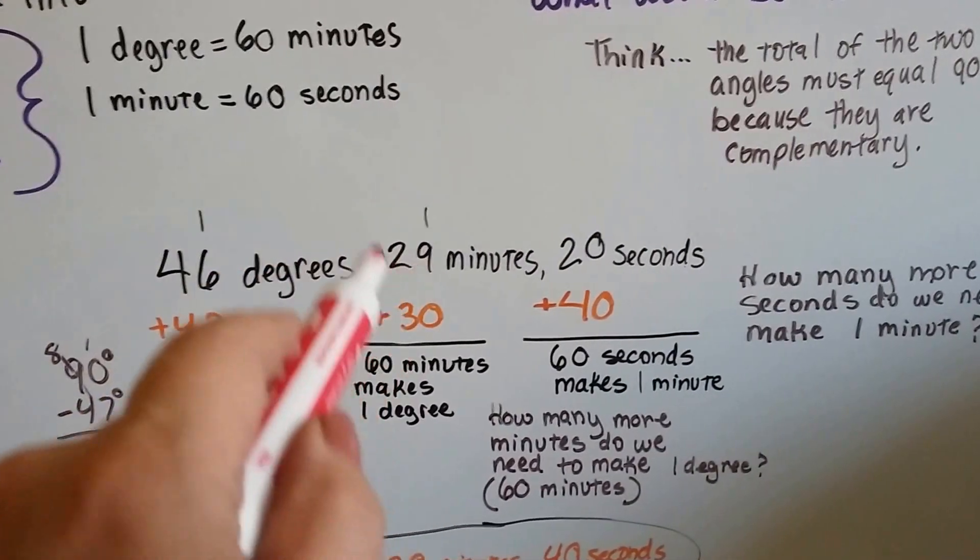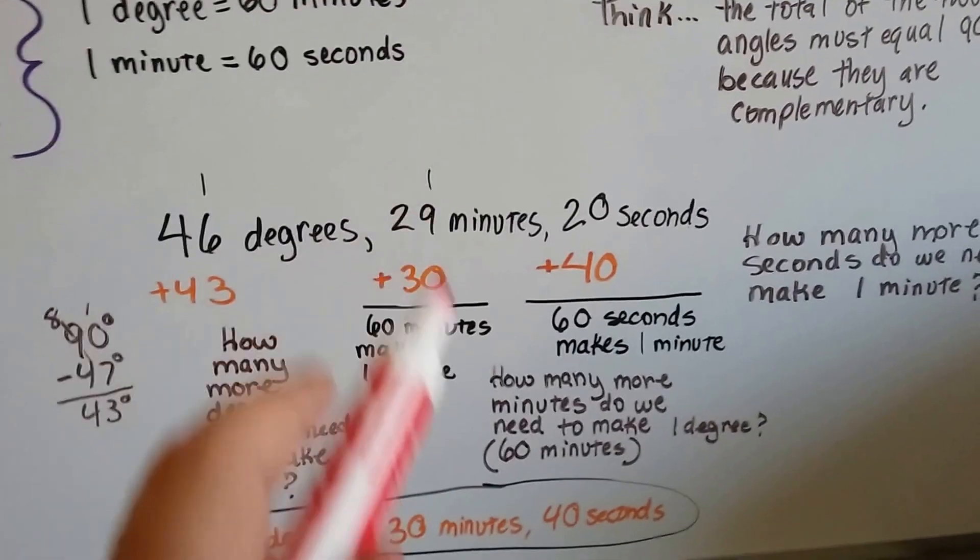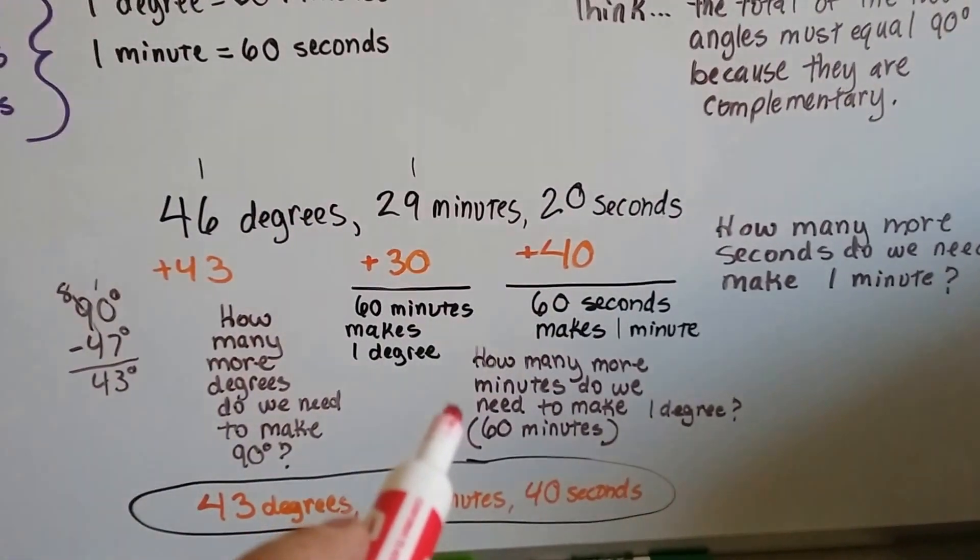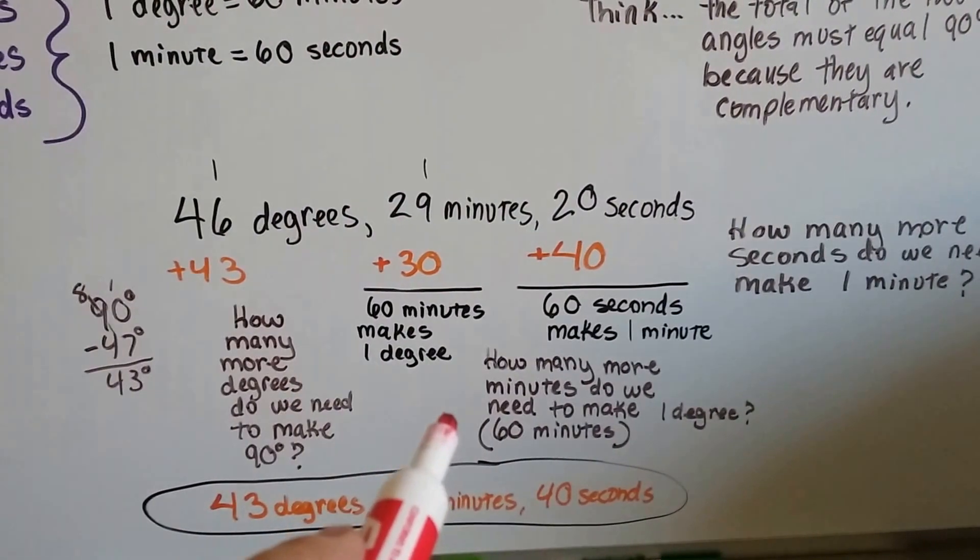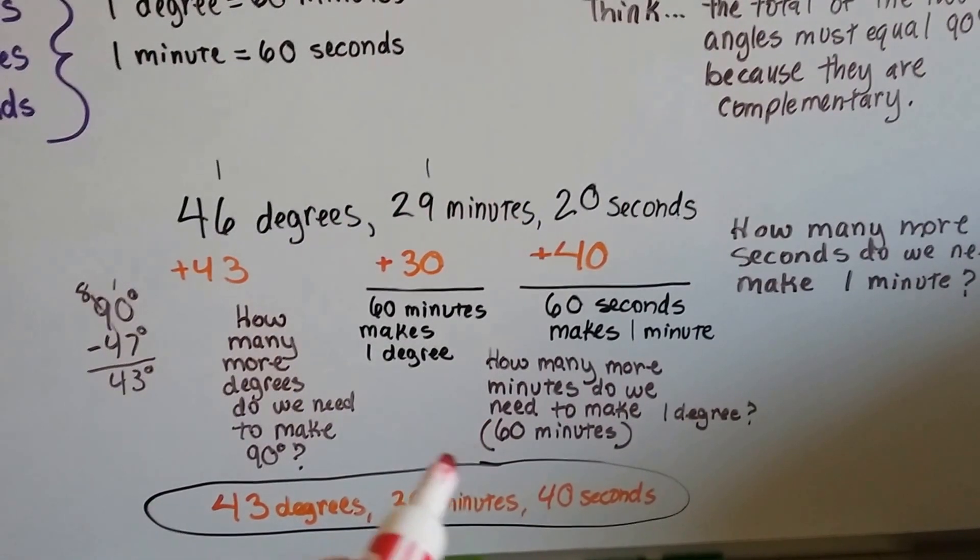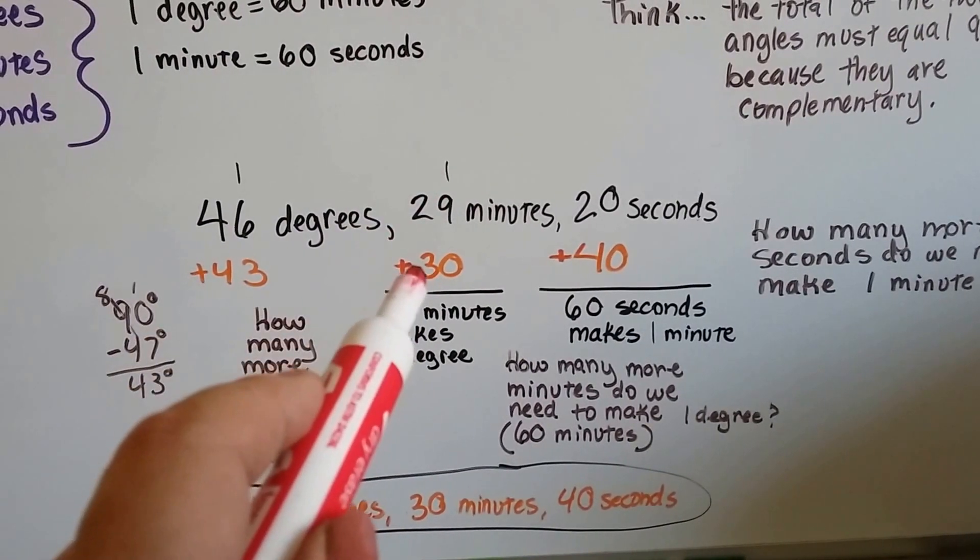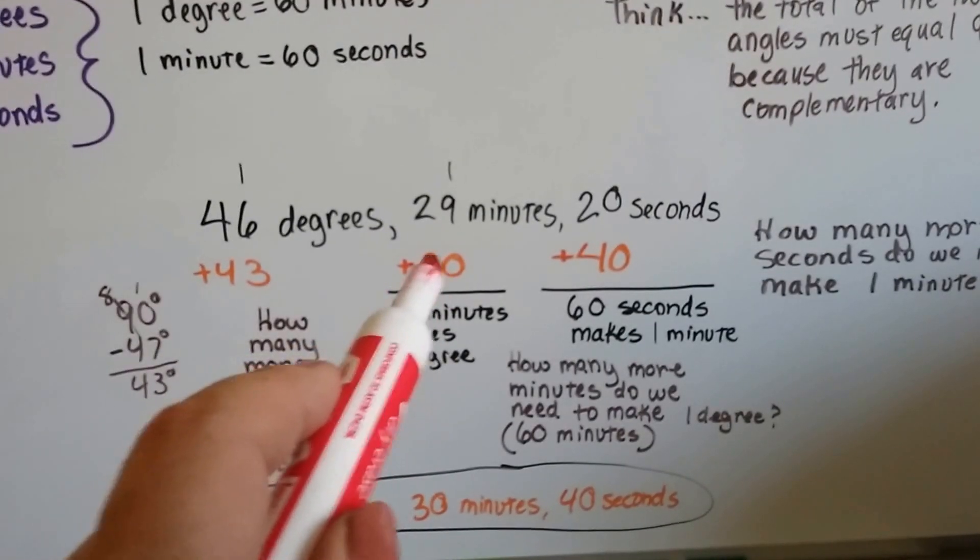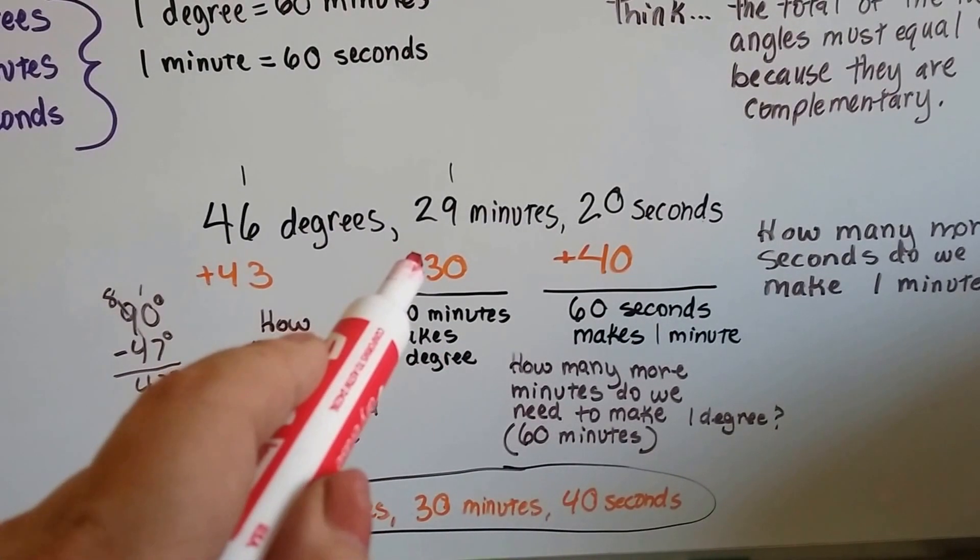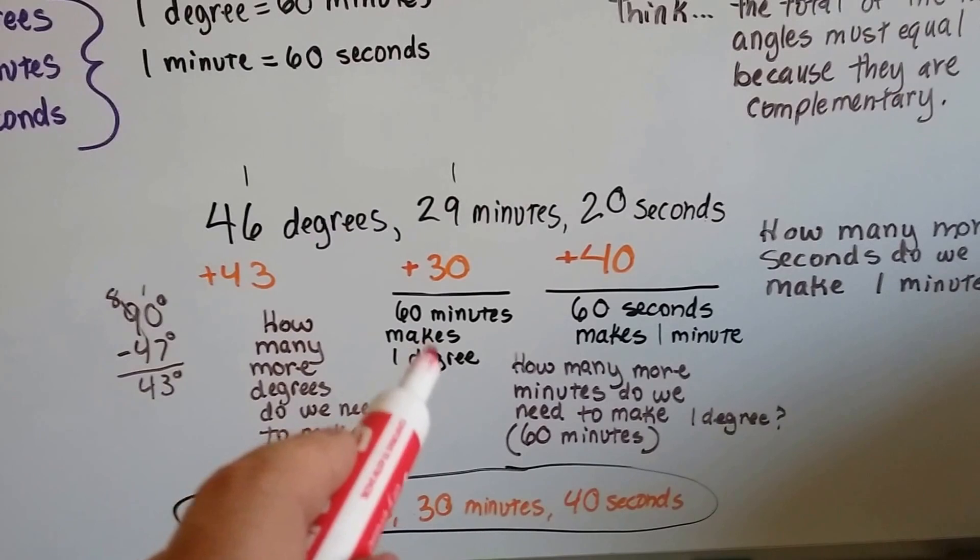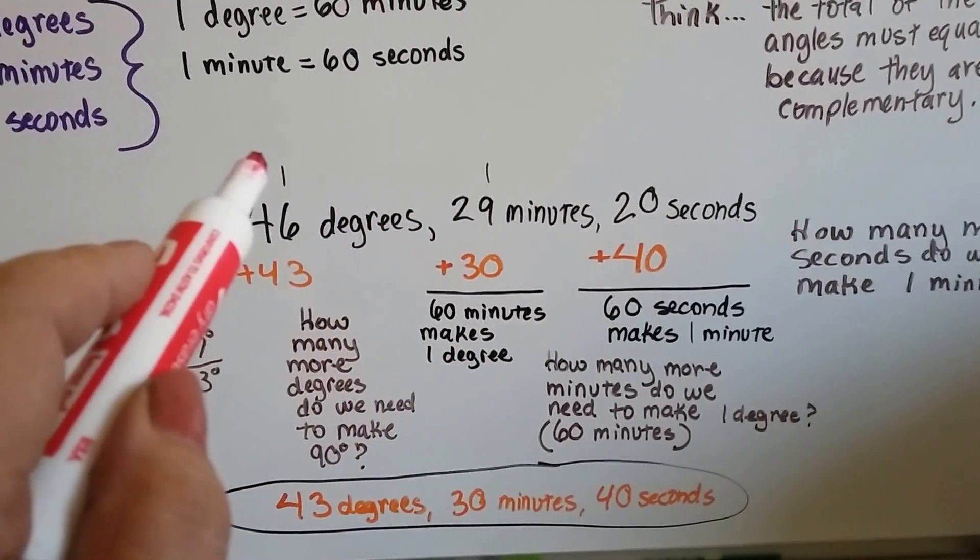So now we've got 30 minutes here, the 29 plus the 1, and we ask ourselves, how many more minutes do we need to make that into 60 minutes, to make it one degree? We've got 30 minutes now with the one carried over, and to get to 60 minutes we need 30 more minutes. So we add our 30 minutes, we total these up, and get 60 minutes, which equals one degree, and we carry over our one degree.